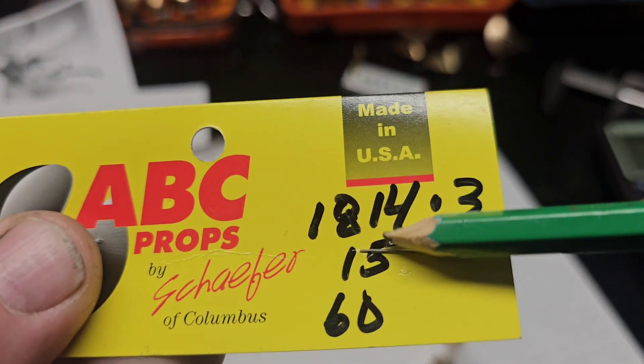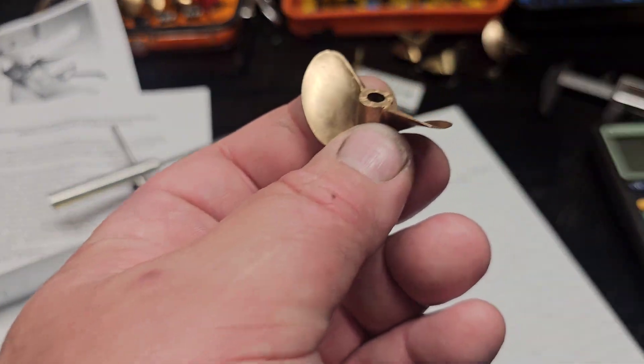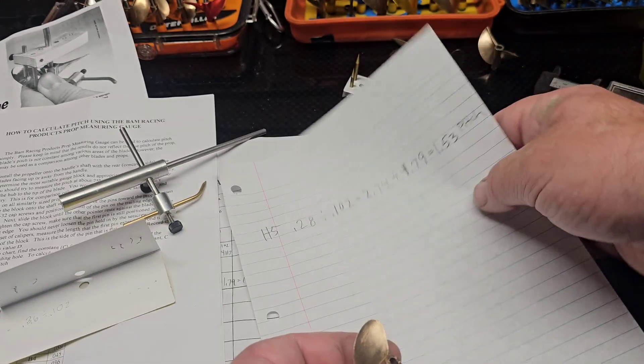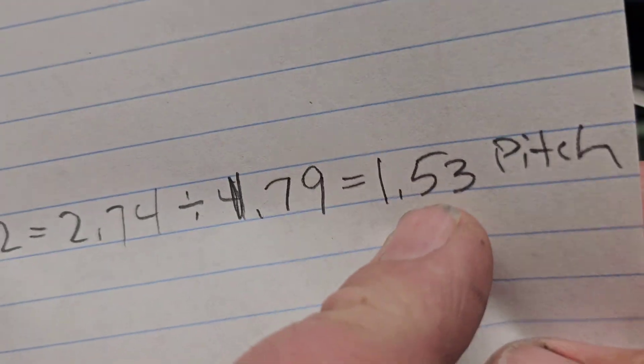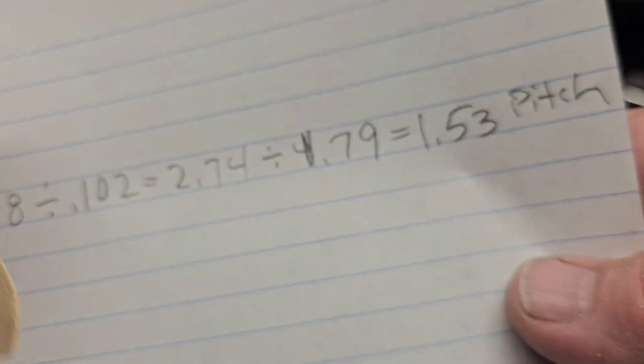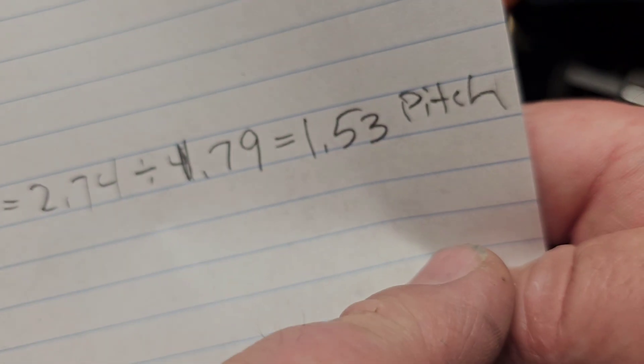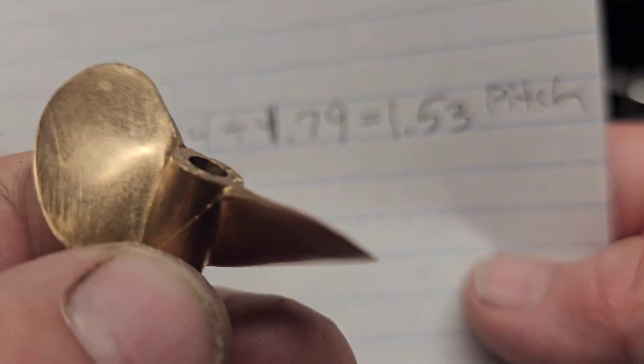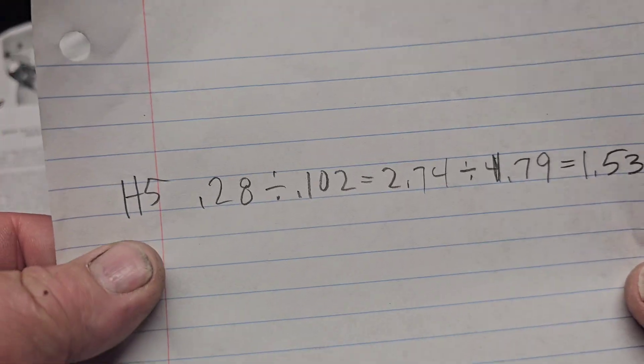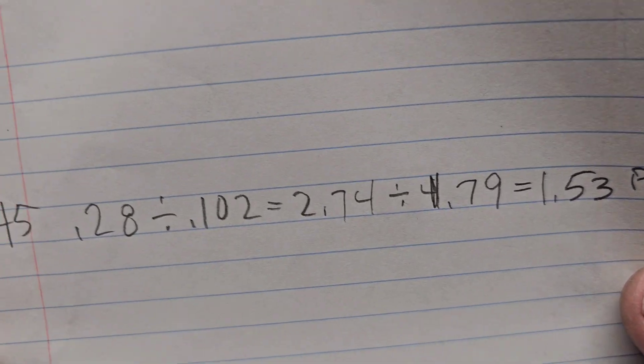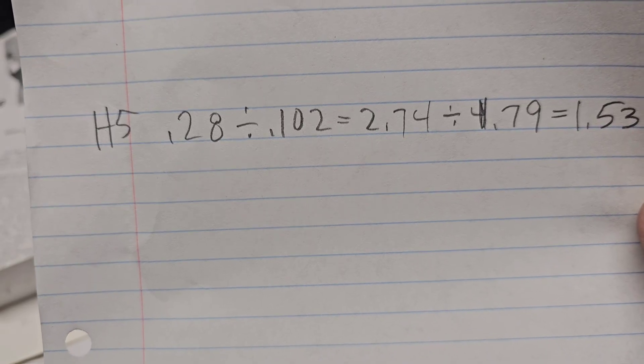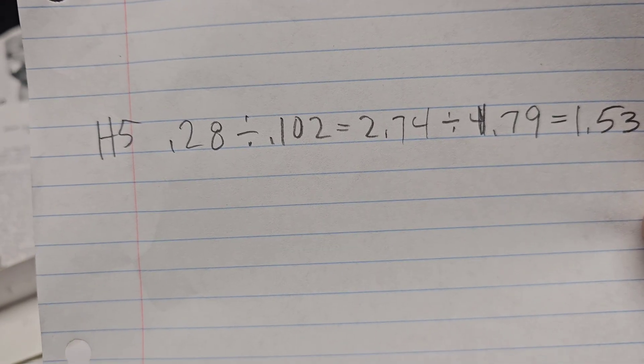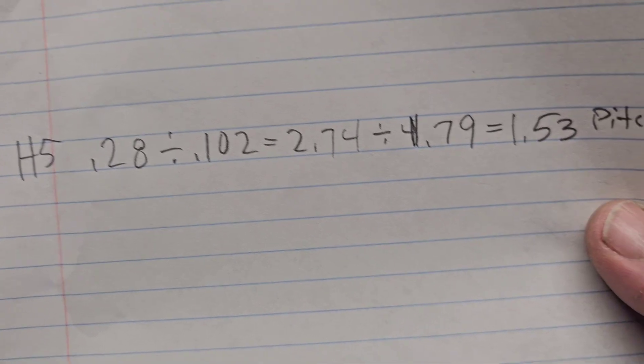Like an 1814, which is a 1.4 pitch. This H5 right here is a 1.5 pitch, 1.53 pitch to be exact. Which I was thinking it was either 1.4 or 1.5. So that's how you break it down. That's the equation. So it's D divided by C equals pitch divided by diameter equals pitch.